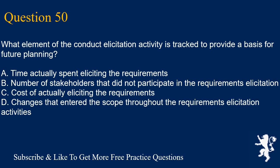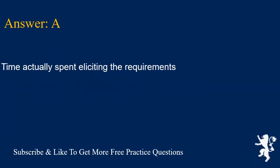Question 50: What element of the conduct elicitation activity is tracked to provide a basis for future planning? A. Time actually spent eliciting the requirements. B. Number of stakeholders that did not participate in the requirements elicitation. C. Cost of actually eliciting the requirements. D. Changes that enter the scope throughout the requirements elicitation activities. Answer is A. Time actually spent eliciting the requirements.